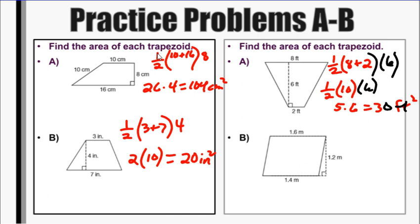And the last one here, we got two bases. Base one point six plus one point four, and the height is one point two.